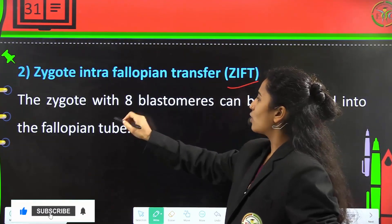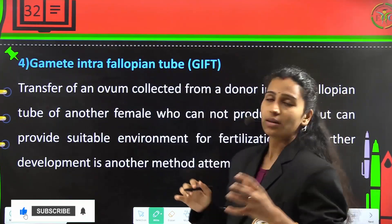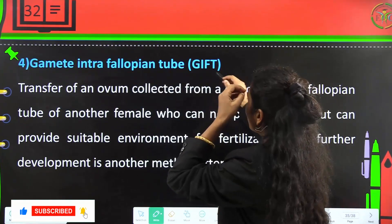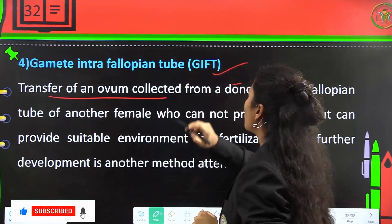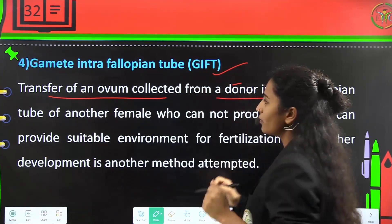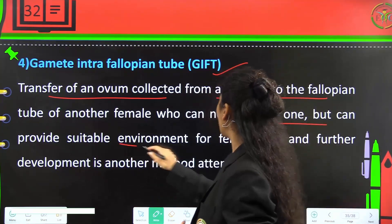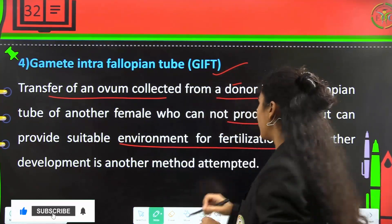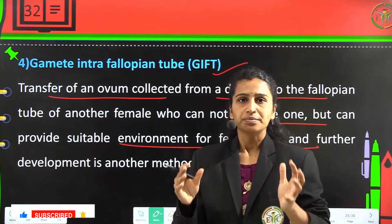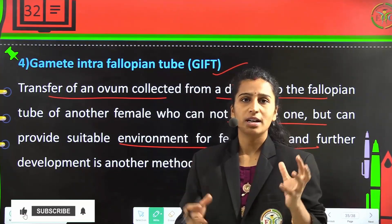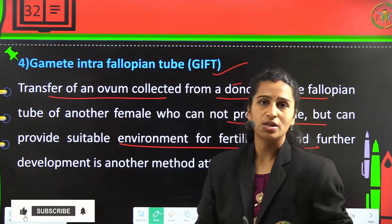In ZIFT, a zygote of up to 8 blastomeres can be transferred into the fallopian tube. In GIFT — gamete intra-fallopian tube transfer — an ovum collected from a donor is transferred into the fallopian tube of another female who cannot produce eggs but can provide a suitable environment for fertilization and further development. So this woman can bear a child but is not capable of producing an egg, making this procedure applicable.